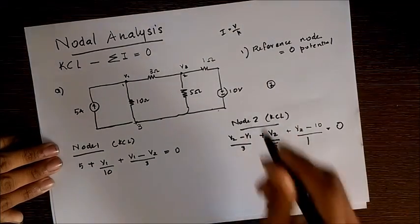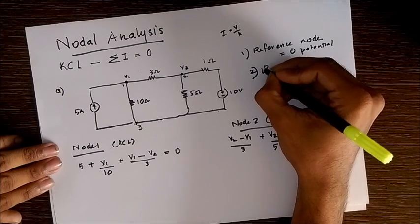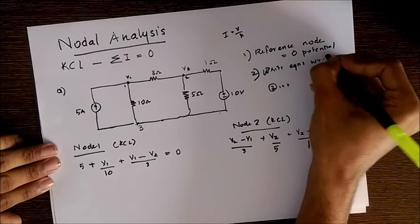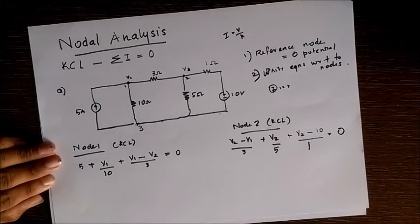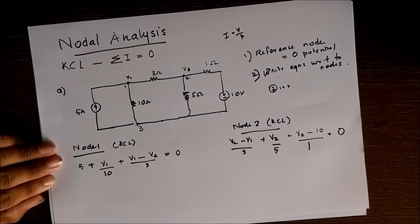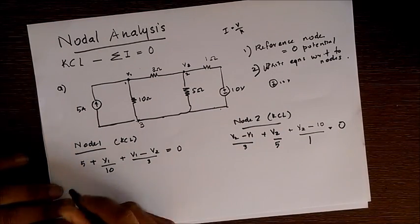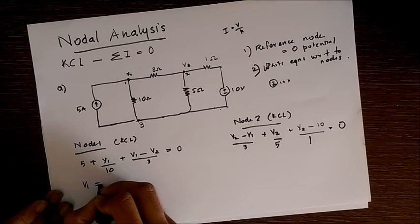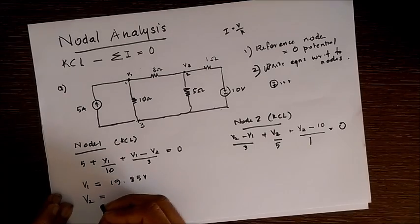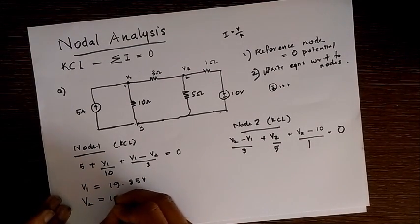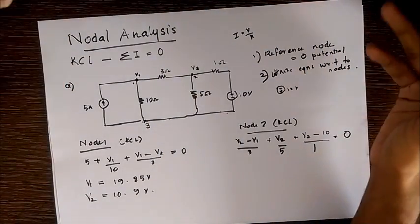Now we write the equations with respect to nodes. After we rearrange the terms of V1 and V2 and solve, we get V1 as 19.85 volts and V2 equal to 10.9 volts. So we get V1 and V2 with respect to this reference node.